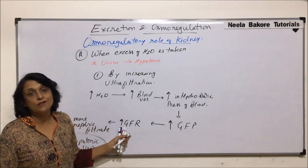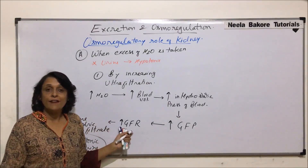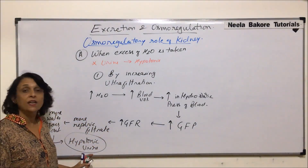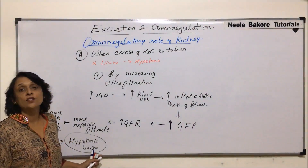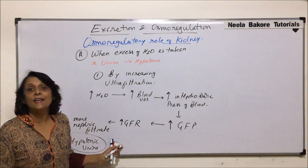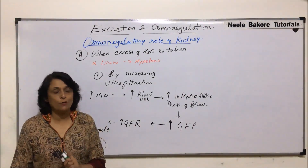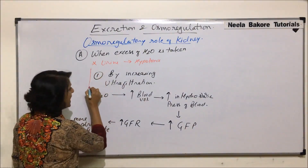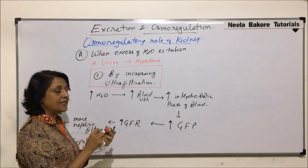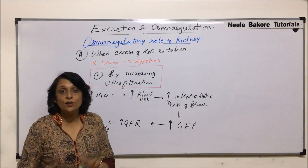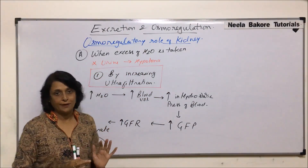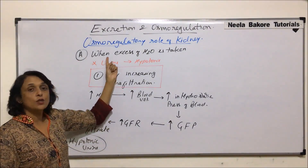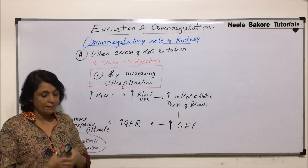If pressure is more, filtration rate is more; if rate is more, more nephric filtrate is formed, carrying all that extra water which will be thrown out of the body. The urine would be hypotonic — dilute urine is thrown out. So in this situation, by increasing ultrafiltration, kidneys maintain the concentration of the body fluid. This is one method by which osmolarity is maintained when excess water is taken in.